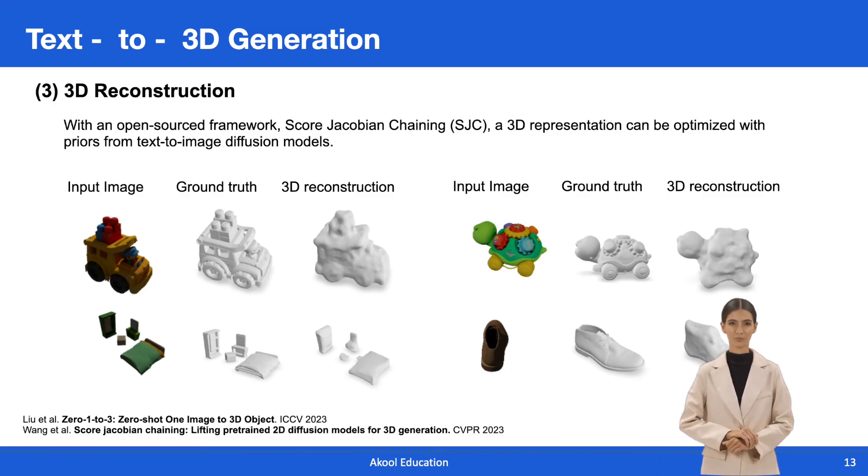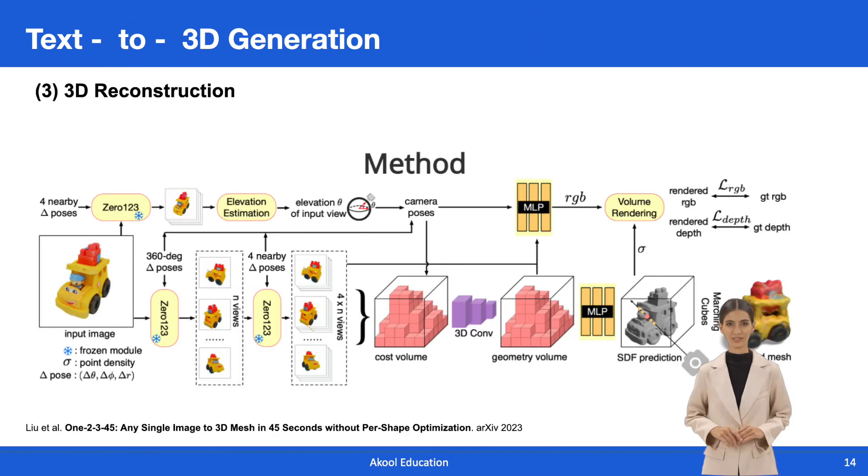The figure illustrates qualitative results of the image-to-3D component. In the first row, input images are displayed, while the second and third rows showcase the corresponding 3D mesh and volumetric shapes, respectively.